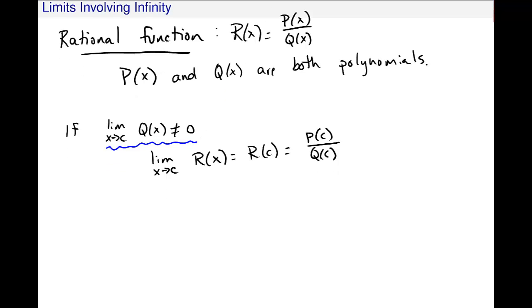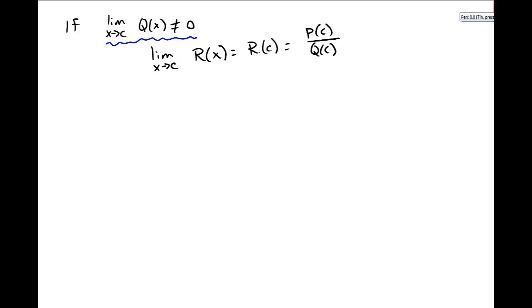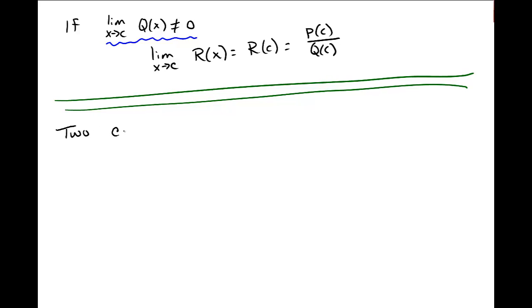I want to take a look at a couple examples. I have two cases. First is case 1: the limit as x goes to c of this p of x over q of x gives me some form that looks like k over 0, where k is a constant and not equal to 0. So I'm going to talk about this case where k is some number and it's divided by 0. Let's look at an example like that.